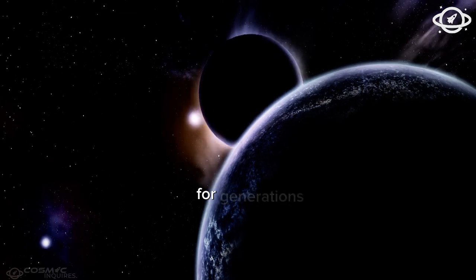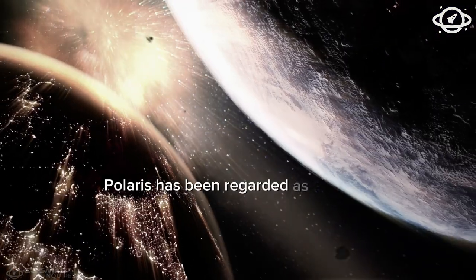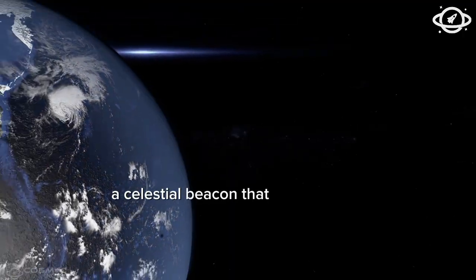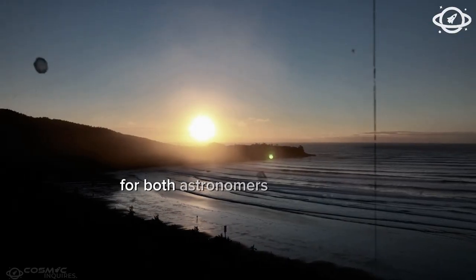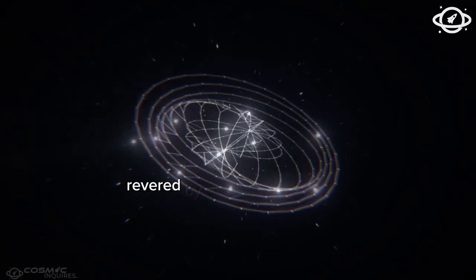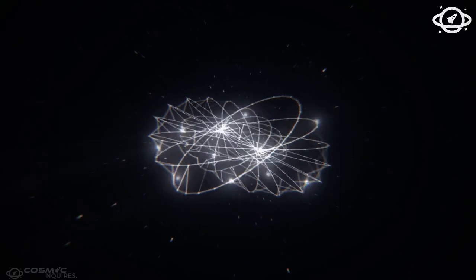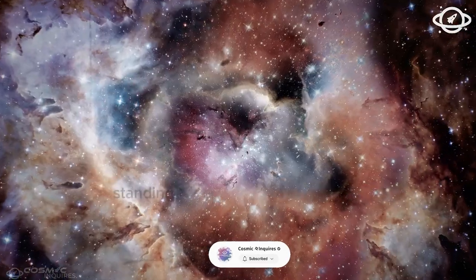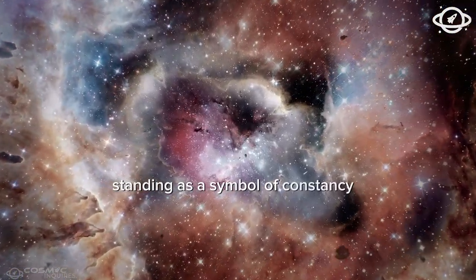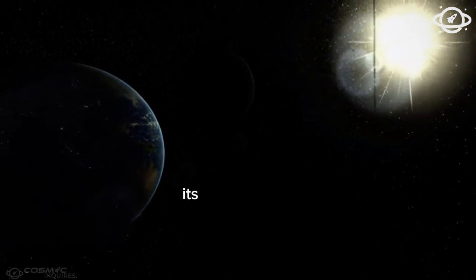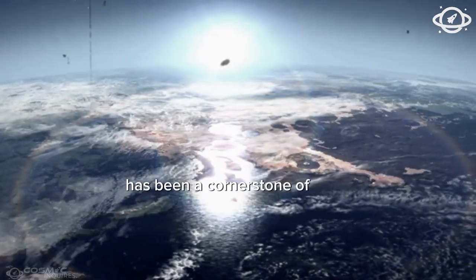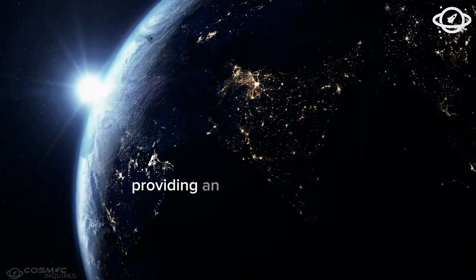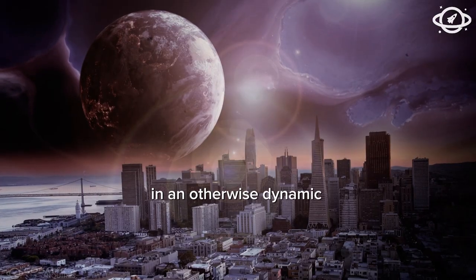For generations, Polaris has been regarded as the guiding star, a celestial beacon that has led the way for both astronomers and navigators alike. Revered by civilizations throughout history, Polaris has held an unparalleled position in the firmament, standing as a symbol of constancy and reliability. Its steady presence has been a cornerstone of celestial navigation, providing an unchanging point of reference in an otherwise dynamic sky.